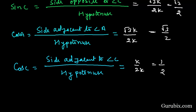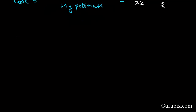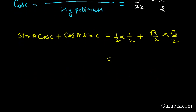Now we shall solve the first part of the question: sin A cos C plus cos A sin C. We have sin A equals 1 over 2, cos C equals 1 over 2, cos A equals square root of 3 over 2, and sin C equals square root of 3 over 2. So this equals 1 over 4 plus 3 over 4, which equals 4 over 4, which means 1. This is the solution of part 1.